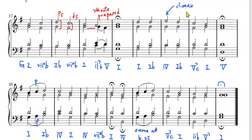Towards the end of this phrase we can find a climax — that is the highest note. In bar 25, we observe a passing note in the soprano and also in the bass. So the chord progressions are still very simple: 1, 1b, 4, 1, 4, 7b, 2, 1.